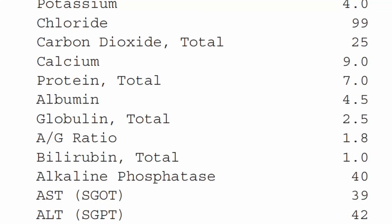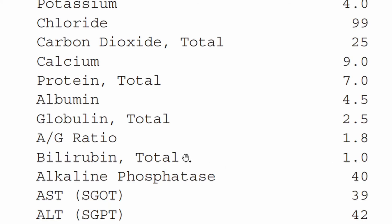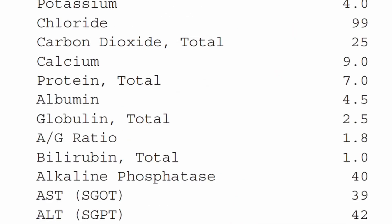Next is your bilirubin. If this is elevated, it could be due to either number one, some type of obstruction in the liver or your bile duct, or number two, it could be due to destruction of your red blood cells. When your red blood cells are being destroyed at a large enough scale, your bilirubin will be elevated as well. So if total bilirubin is elevated, your doctor will order additional testing to see where it's coming from.